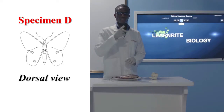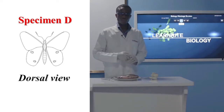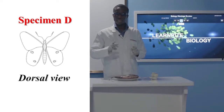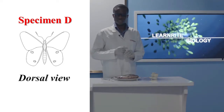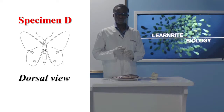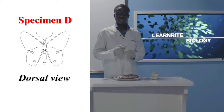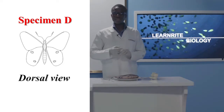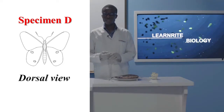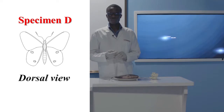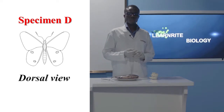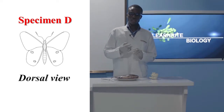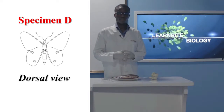Why do we say D is a dorsal view? Because you cannot see the legs — the legs are attached on the other side that you cannot see. So D is a dorsal view.